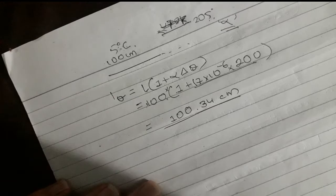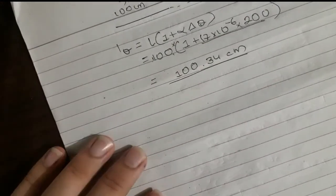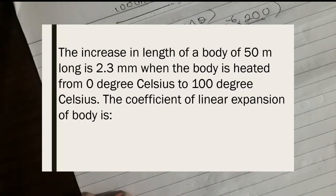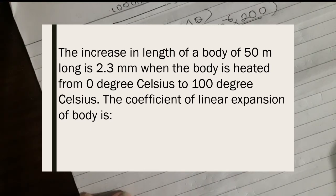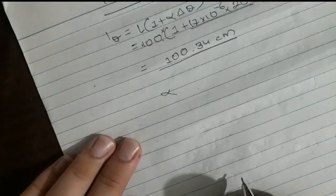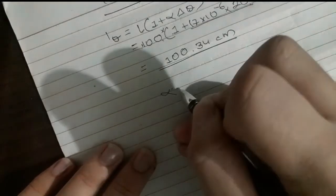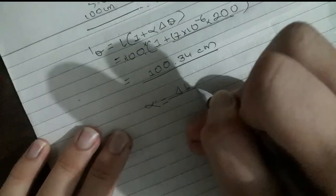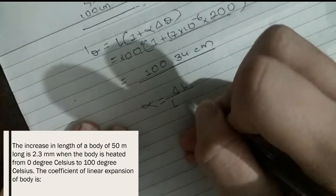Question 2: The increase in length of a body 50 meters long is 2.3 millimeters when the body is heated from 0 degrees Celsius to 100 degrees Celsius. Find the coefficient of linear expansion alpha. Alpha equals delta-L divided by L divided by change in temperature.